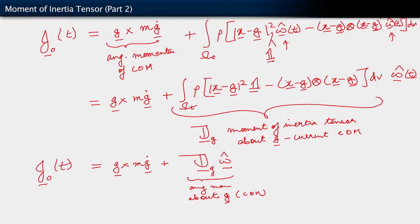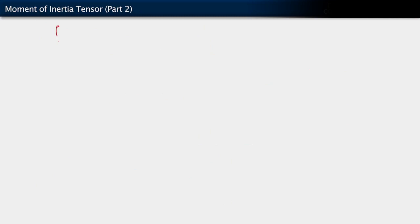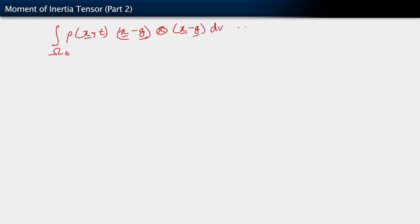To round off the segment, I just want to state that a tensor of this particular form — whenever we get something of the form integral over omega_t of ρ(x,t)·(x minus g) tensor (x minus g) dV — we call it the Euler tensor, relative to g, relative to the position of the center of mass.